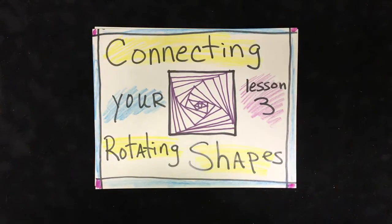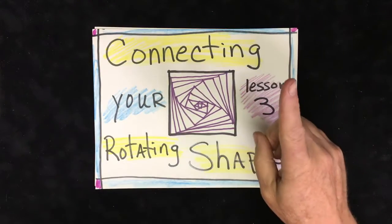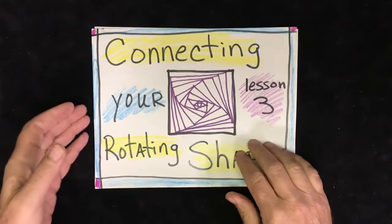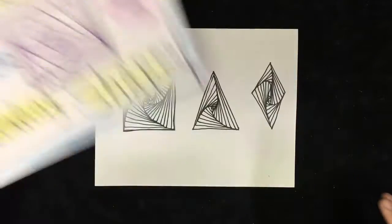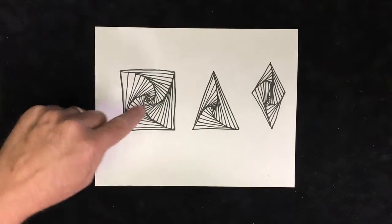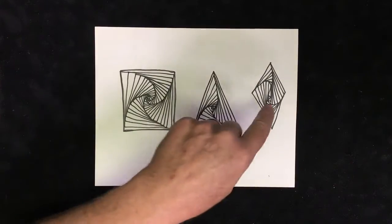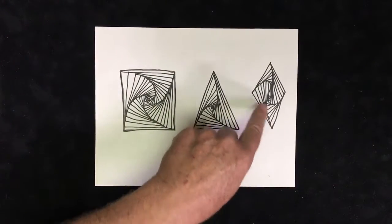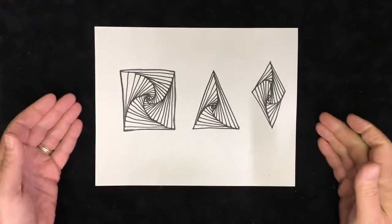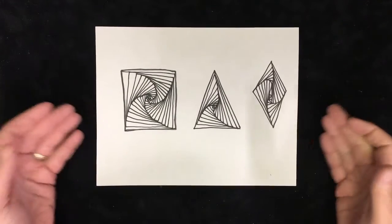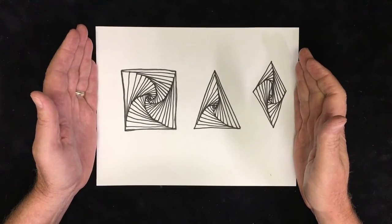Now you guys had some homework, don't tell me that you didn't. Your homework was to do three shapes: a square, a triangle, and a shape of your choice. I went ahead and went with the diamond on here.